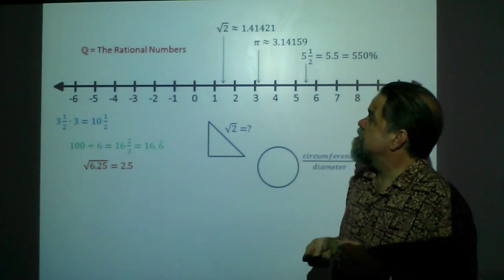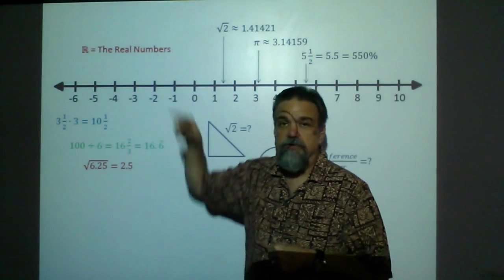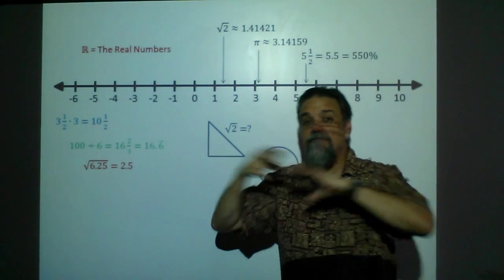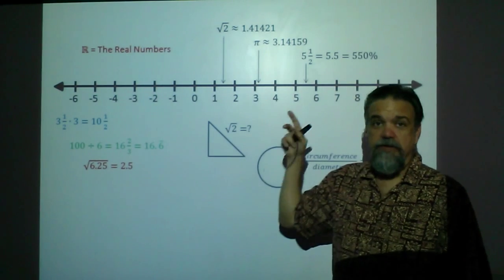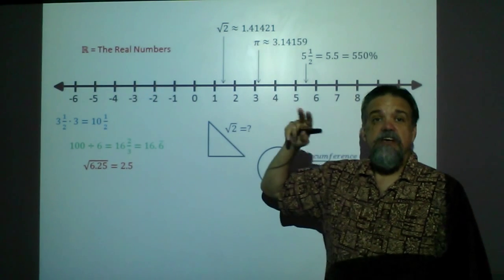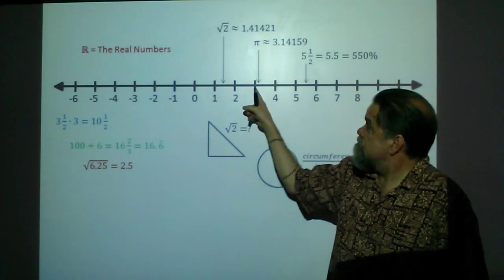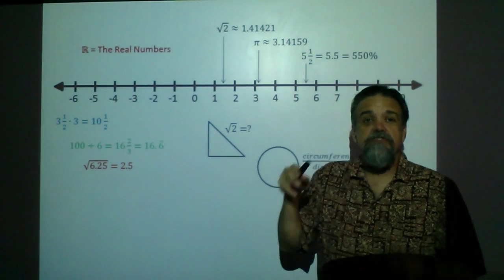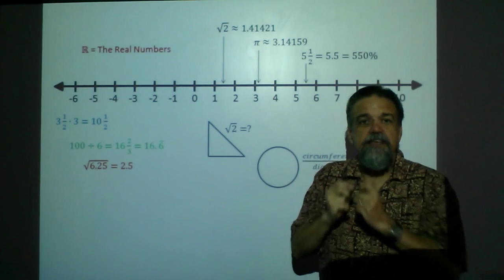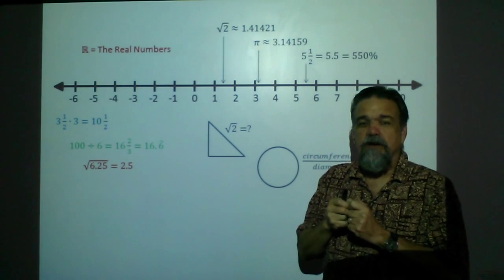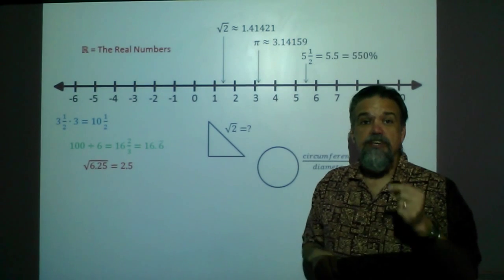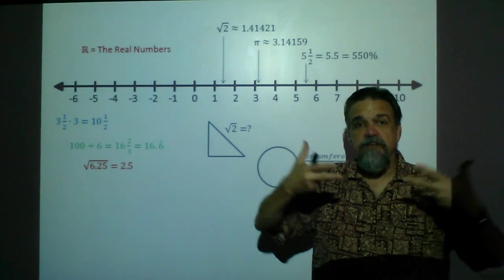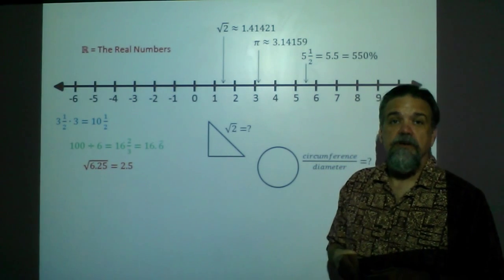We expand our idea into the real numbers. The real numbers are every single number that you can find on the number line — it's the integers, it's the numbers in between the integers, the rational numbers when you divide one integer by another, and it's the numbers in between the integers that can't be exactly quantified by a division problem — in other words, the irrational numbers. When you combine the rational numbers and the irrational numbers together, you get the real numbers.